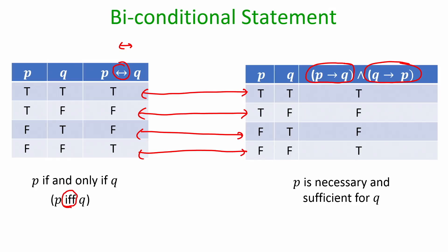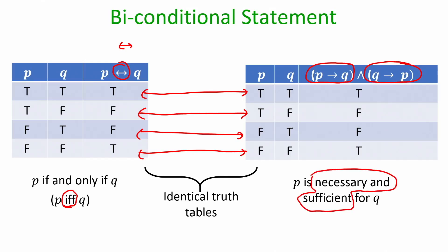P implies Q means P is sufficient for Q, and Q implies P means P is necessary for Q. That is why this biconditional statement also represents a statement of the form that P is necessary and sufficient for Q.